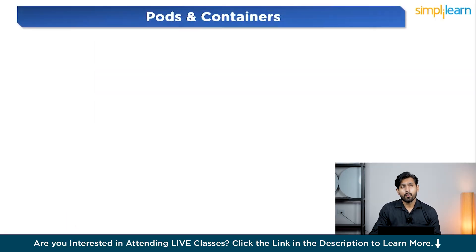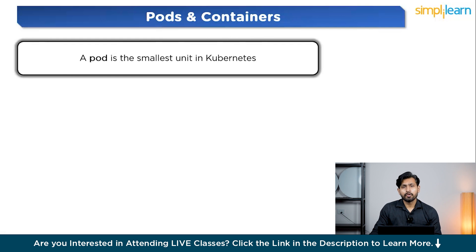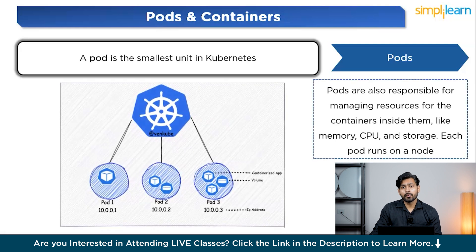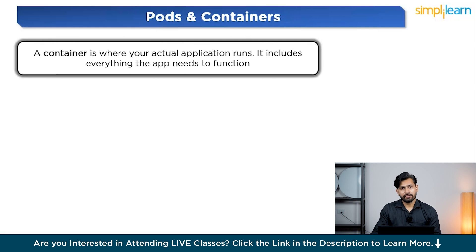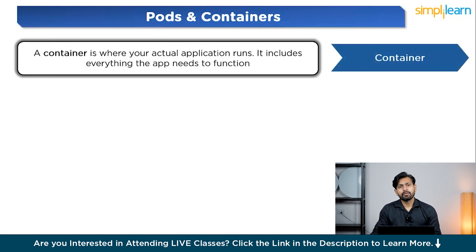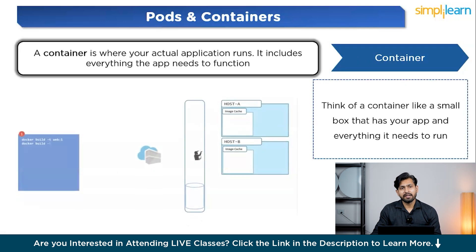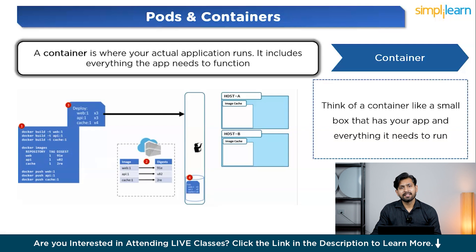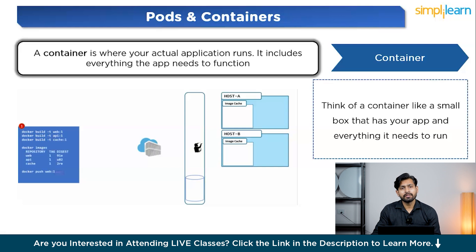Let's start with understanding what a Pod is. A pod is the smallest unit in Kubernetes — it is like a wrapper around your application. Inside a pod, there is usually one or more containers. A container is where your actual application runs. It includes everything the app needs to function, like code, system libraries, and dependencies. Containers are lightweight and can be easily moved across different environments, making them very popular in modern software development. Whether you run a container on your laptop, a cloud server, or inside a Kubernetes pod, it will always behave the same way.